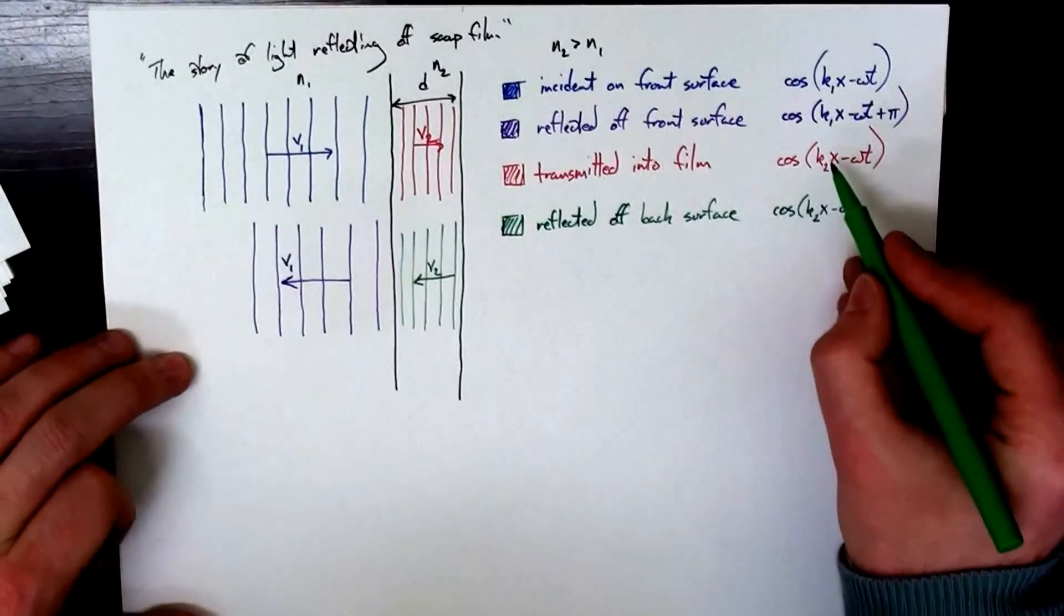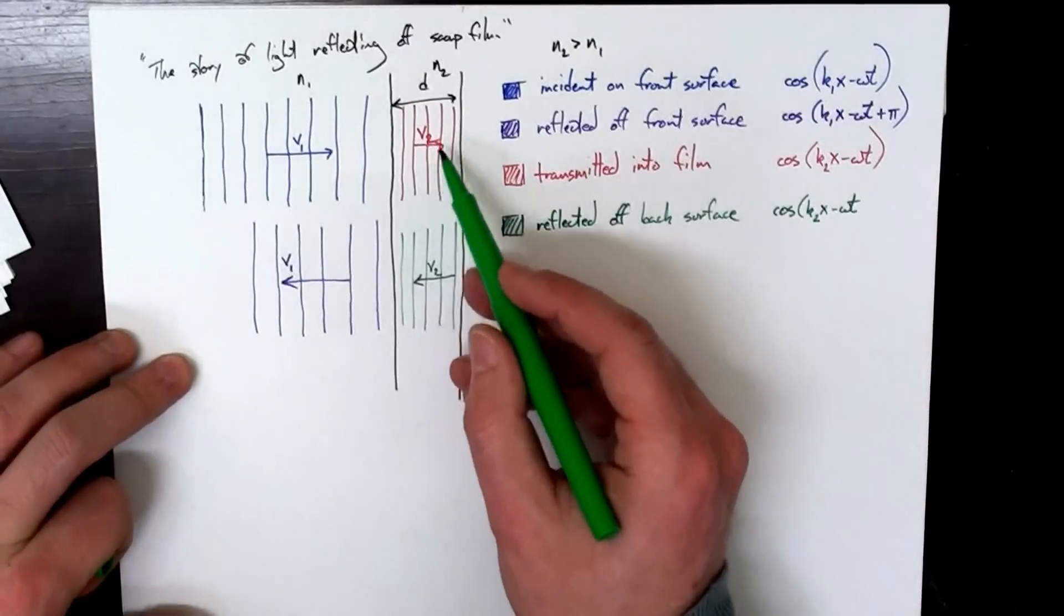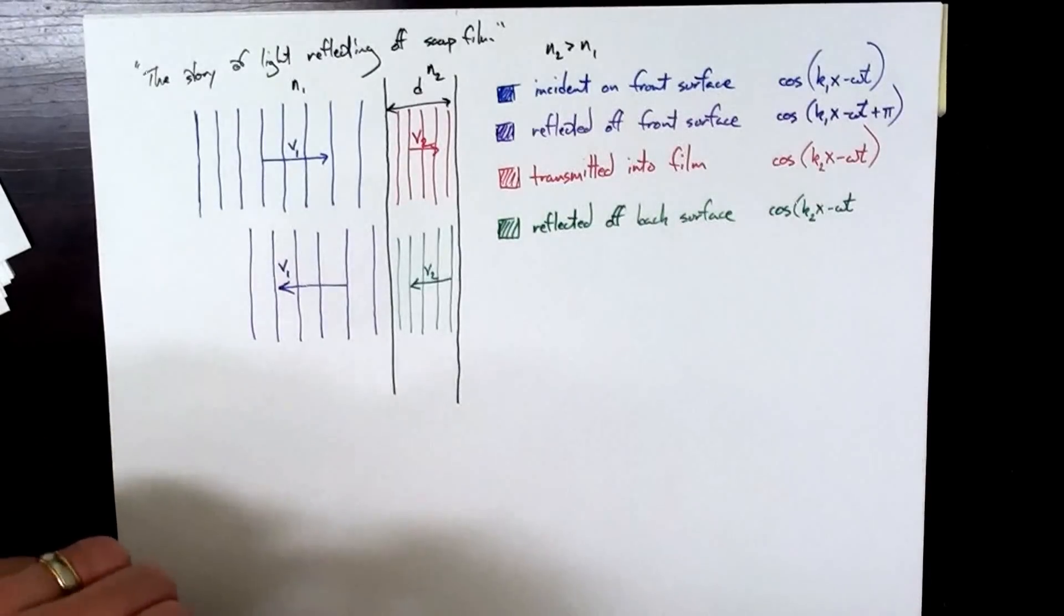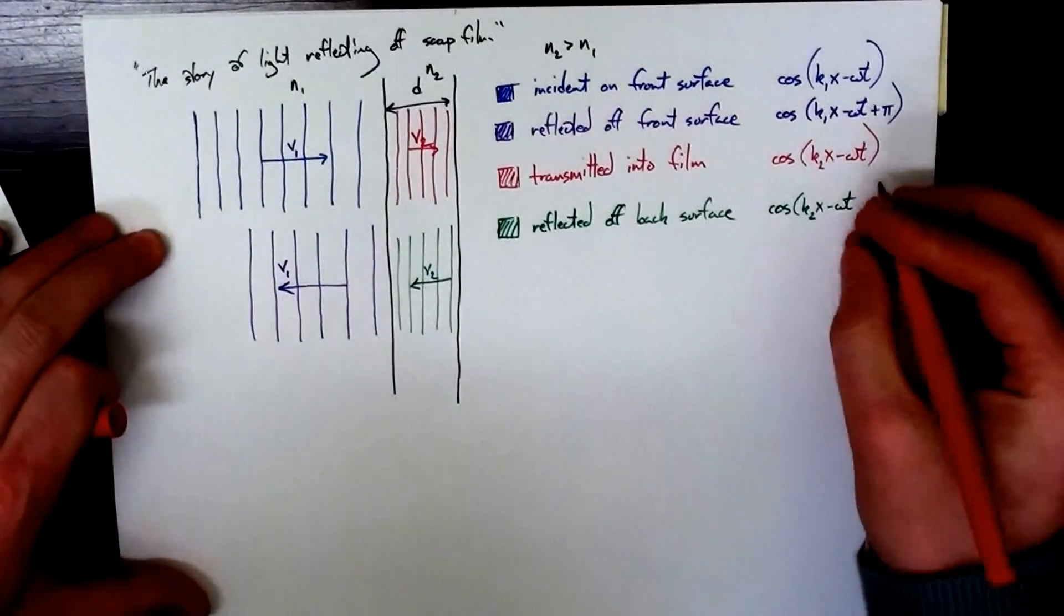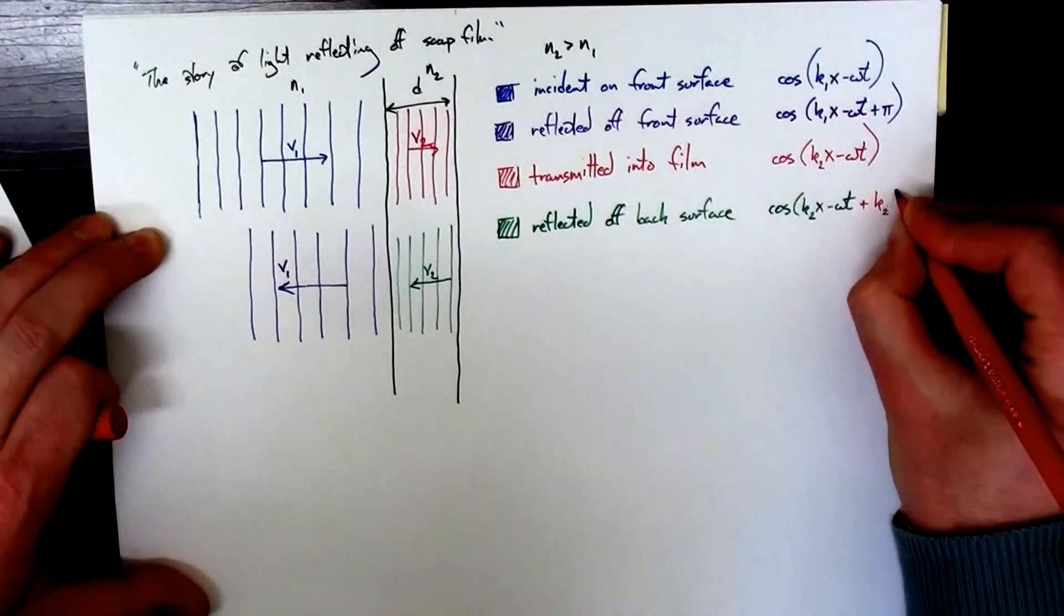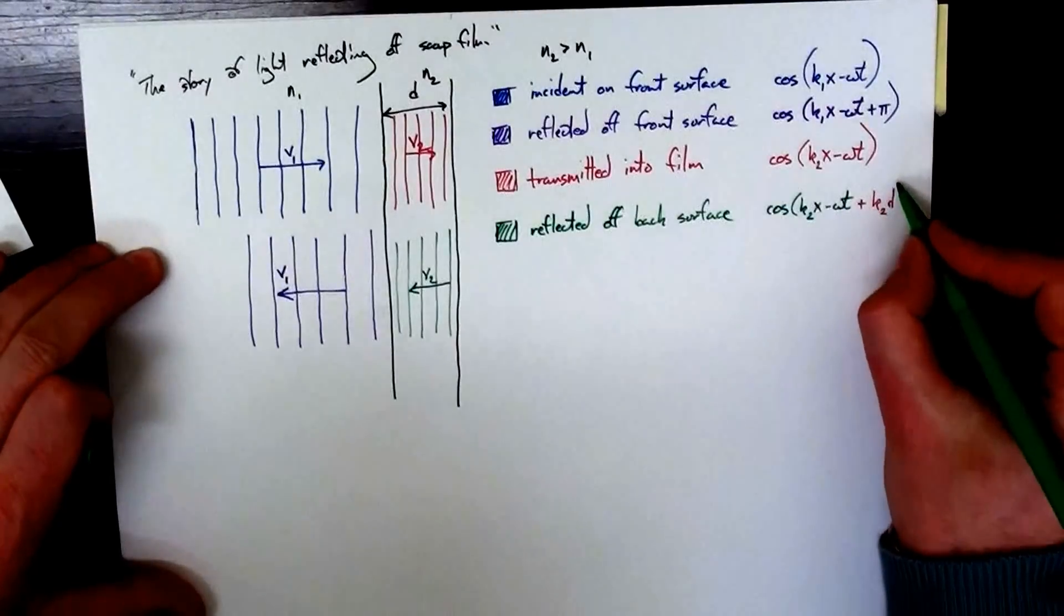So this is reflected off the back surface. And now it's going to be described by cosine k2x minus omega t. But remember, it's picking up part of its phase from this guy. This light was this light that traveled a distance d through the material. So there's this extra phase here. Plus k2d.